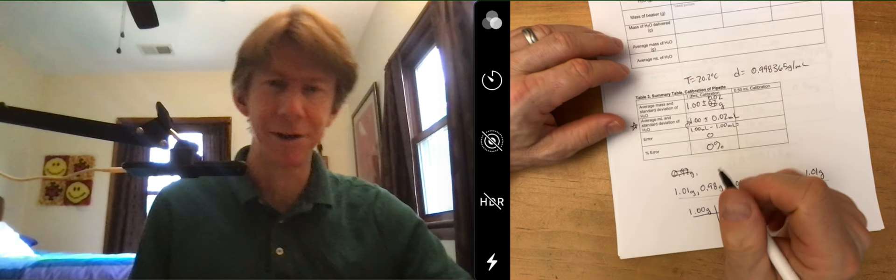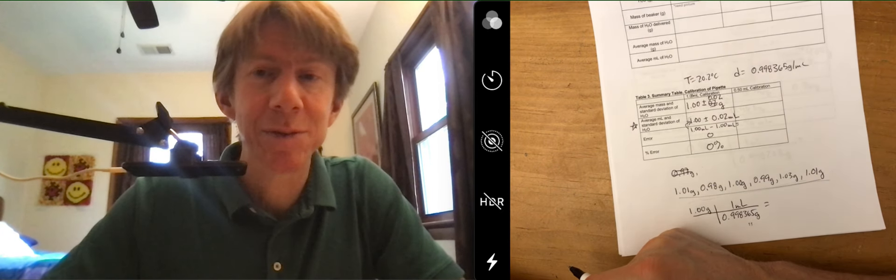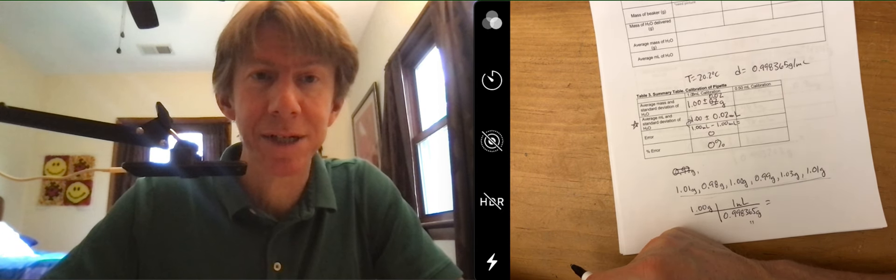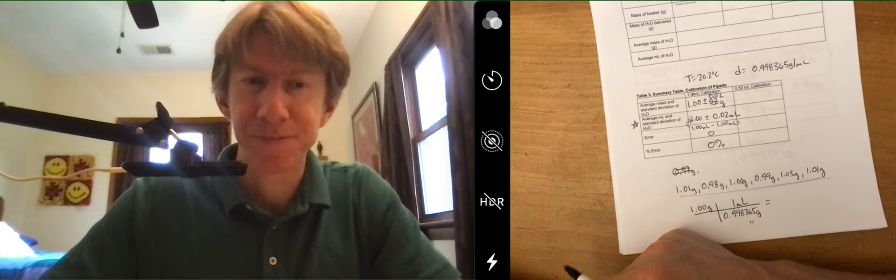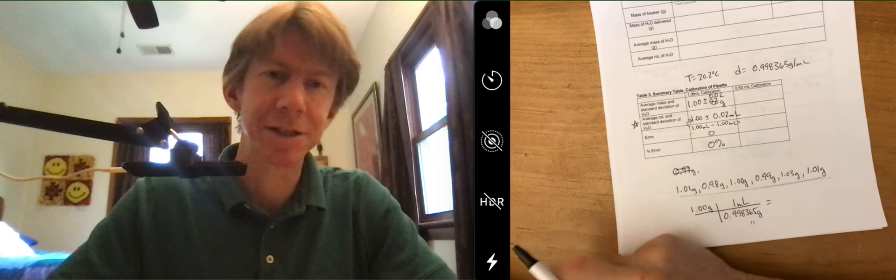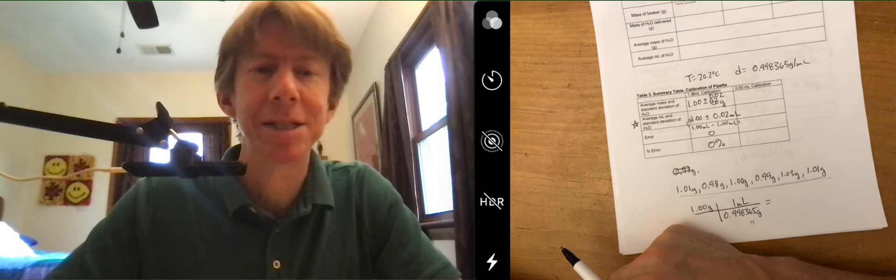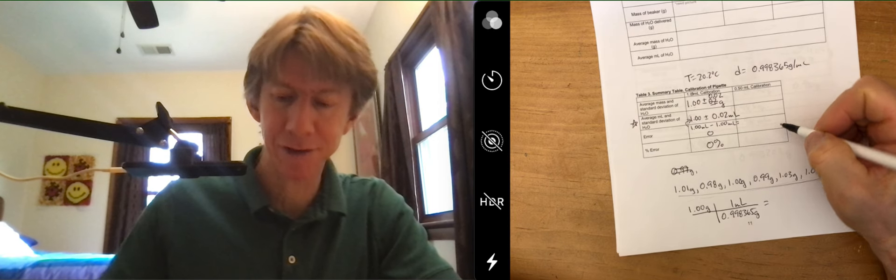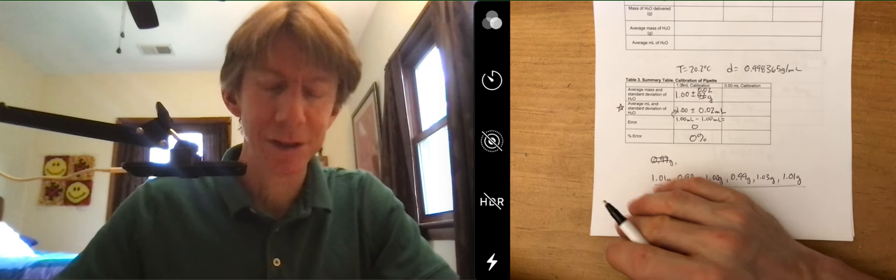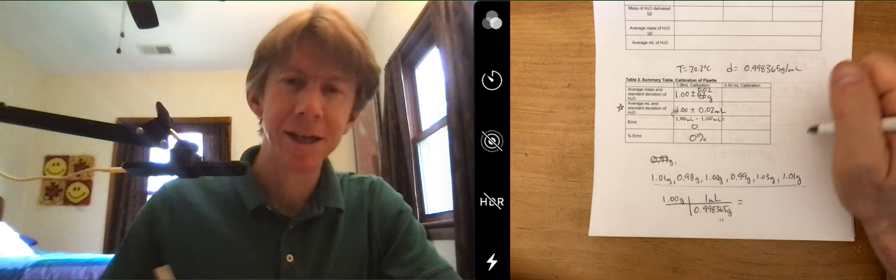Yours does not have to be 0 percent error, yours does have to be calculated correctly so that's why I stepped you through the calculations. It's all right if it is but it doesn't have to be. You'll do the same thing here for your 0.5 milliliters, you'll complete this table and then you'll last but not least do the same thing for your 50 milliliter graduated cylinder.